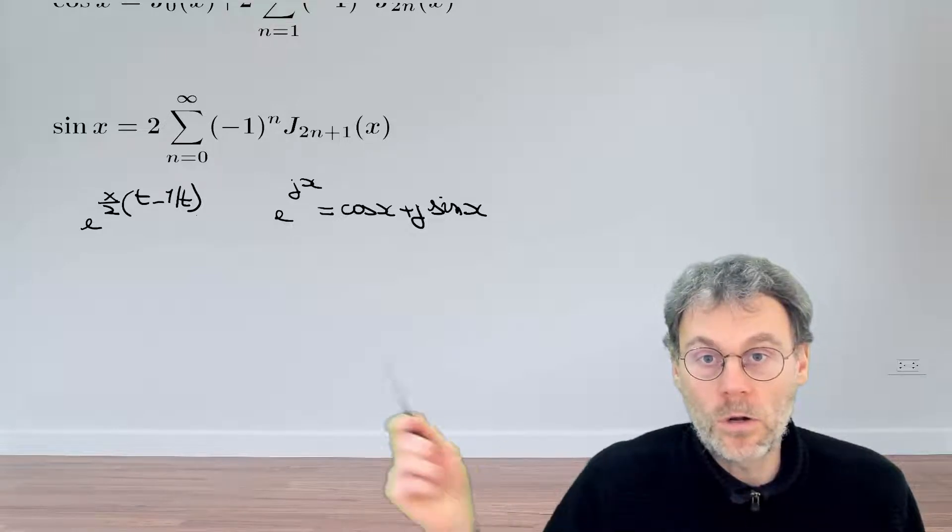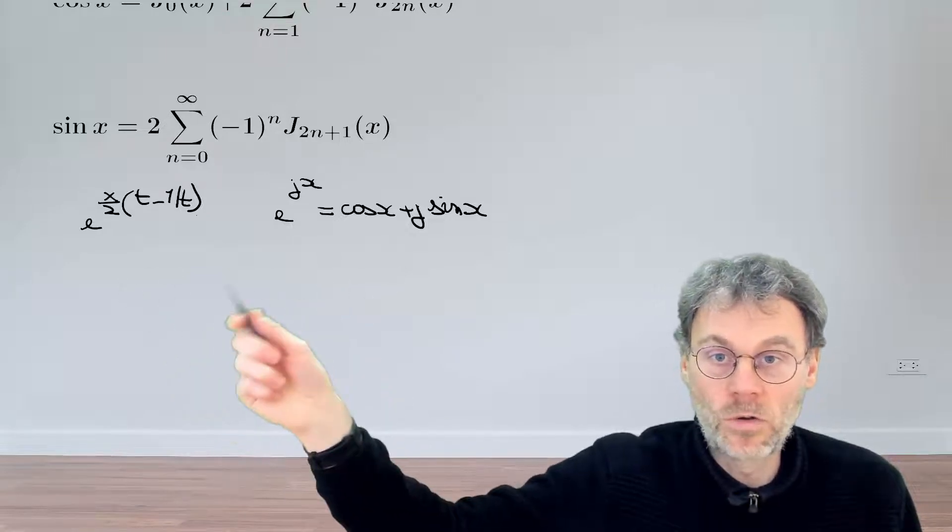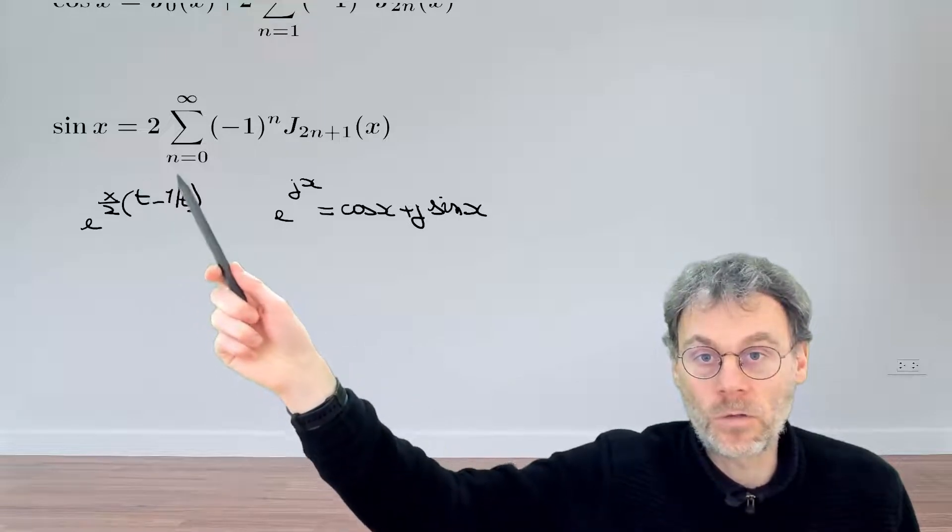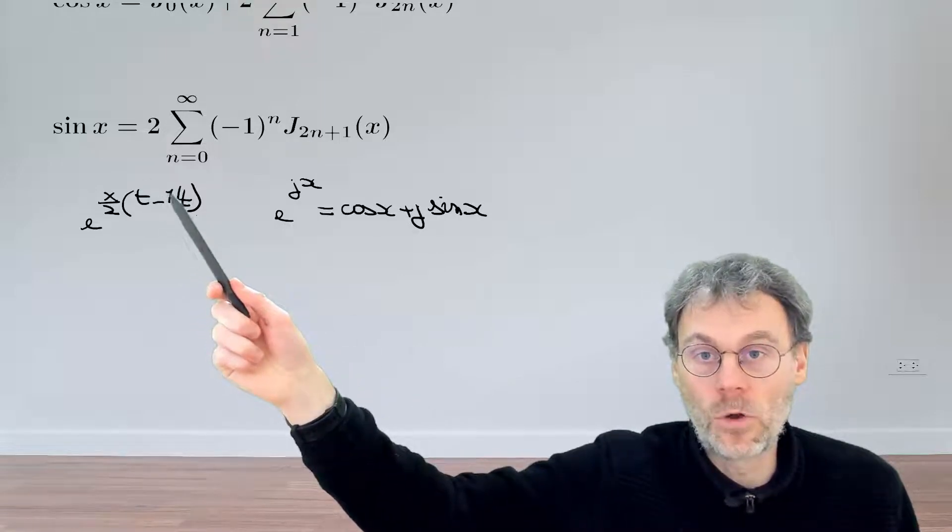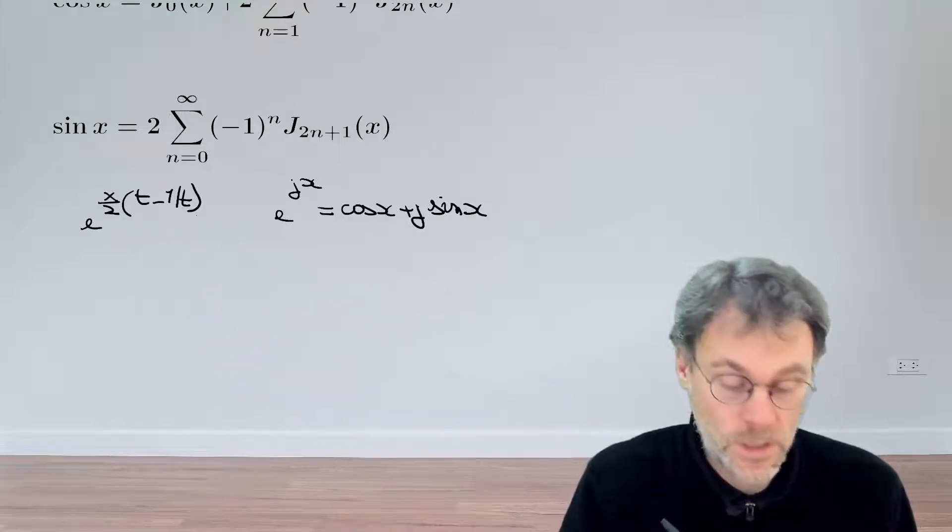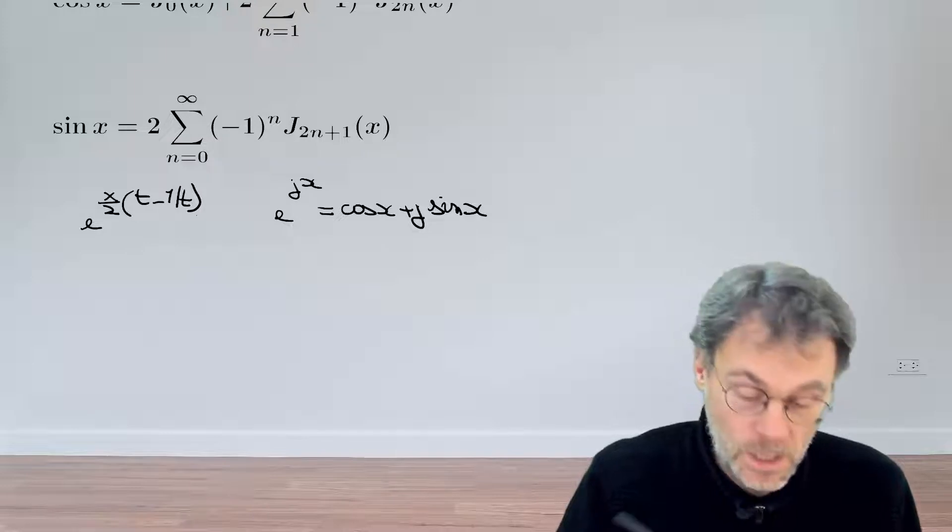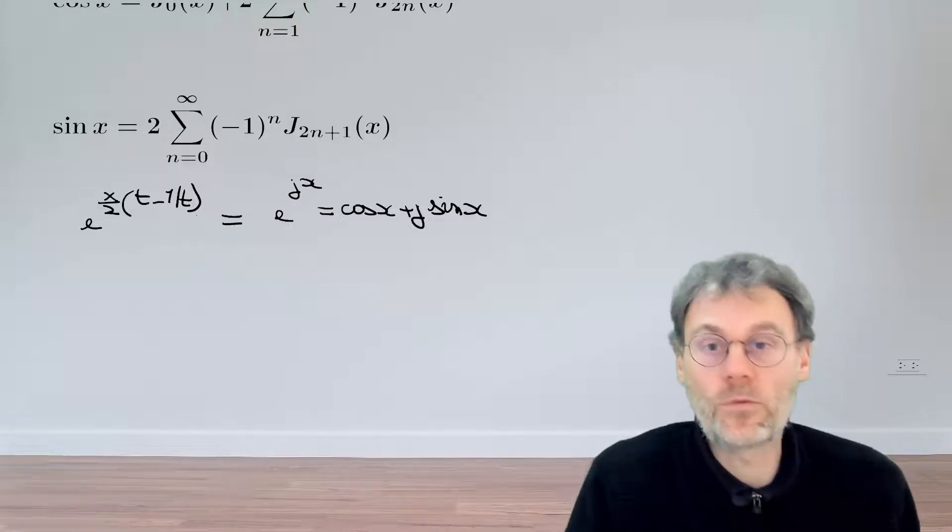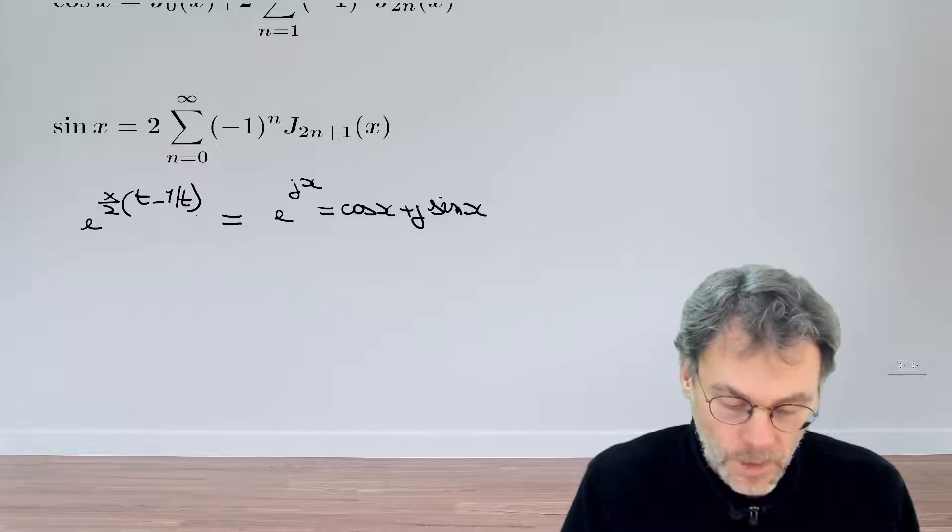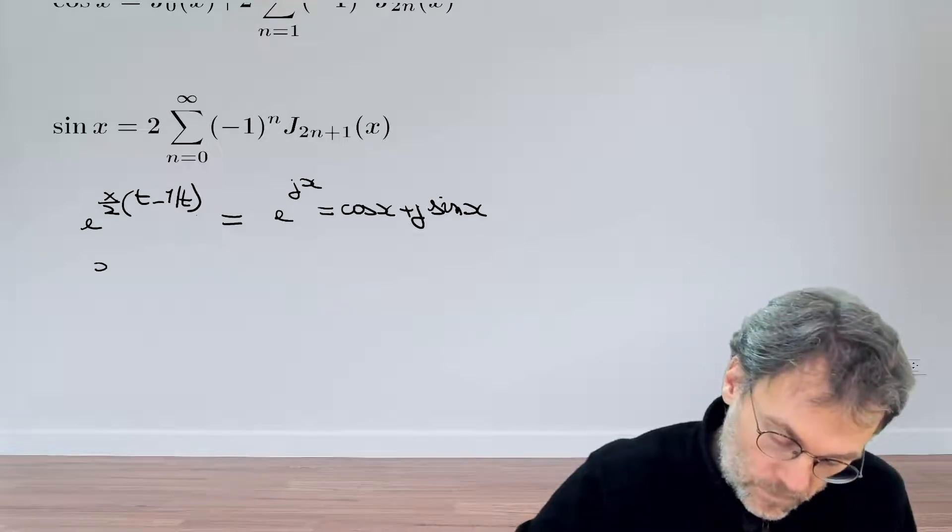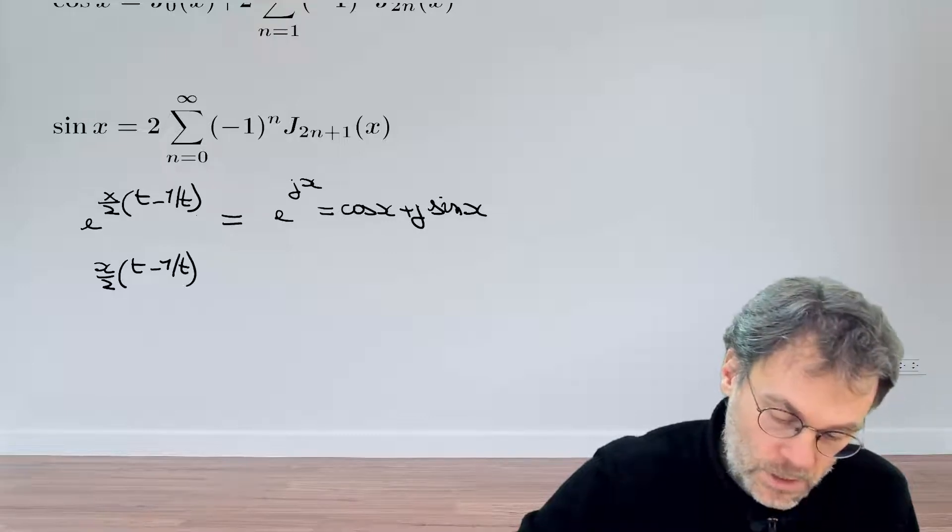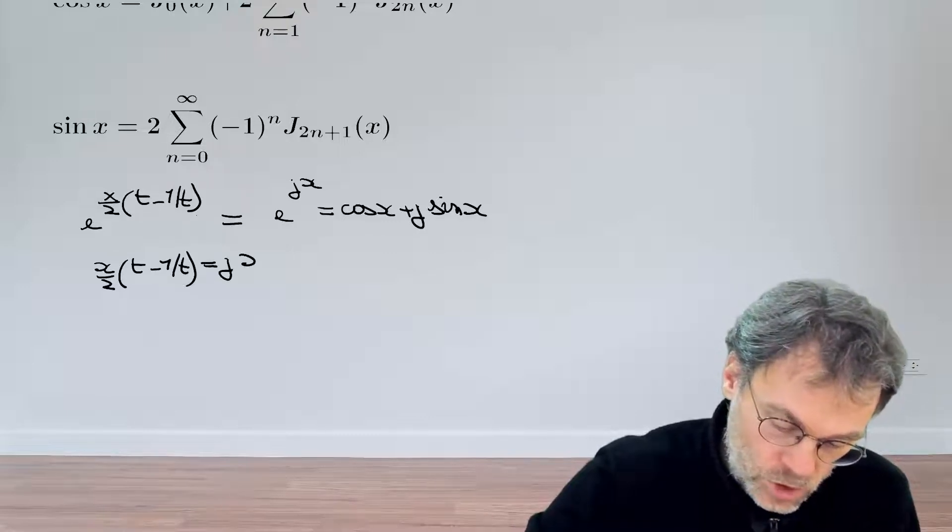Looking at these two expressions, it's quite logical that if you make a certain choice for t, you can hope to turn this expression into that expression and therefore into cosine x plus j sine of x. So let's see what happens if we demand that these two things become equal.